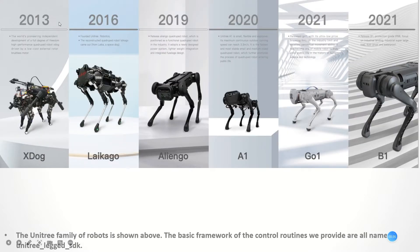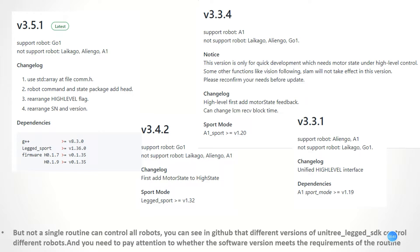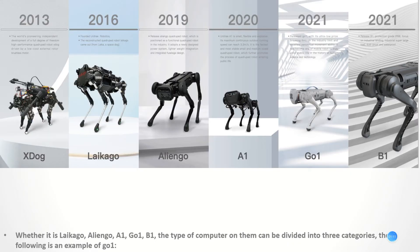In this picture, we can see these are amongst all our robots. The basic framework of the controls we provide are all named Unitree-legged SDK. But not a single routine can control all robots. You can see in GitHub that different versions of Unitree-legged SDK control different robots, and you need to pay attention to ensure the software version meets the requirements of the routine. We can confirm the version of our robot dogs — whether it's AlienGo, A1, Go1, or B1 — the type of computer on them can be divided into three categories.